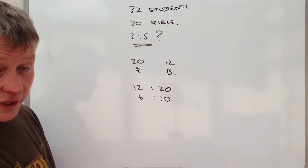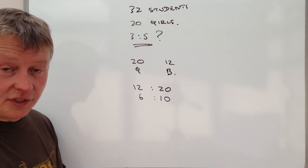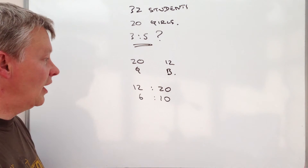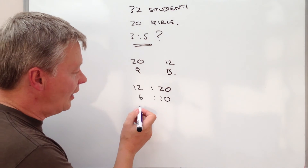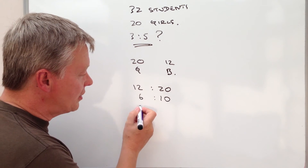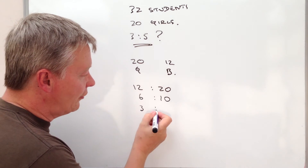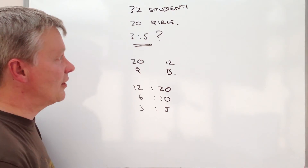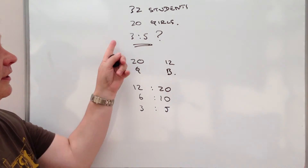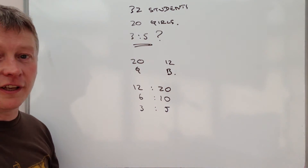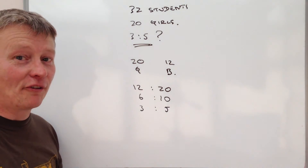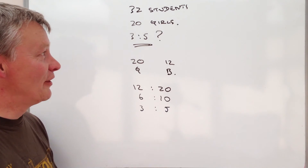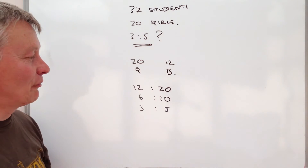Then we can divide by 2 again, and we get a ratio of 3 to 5. So Rosie is perfectly correct with her ratio.